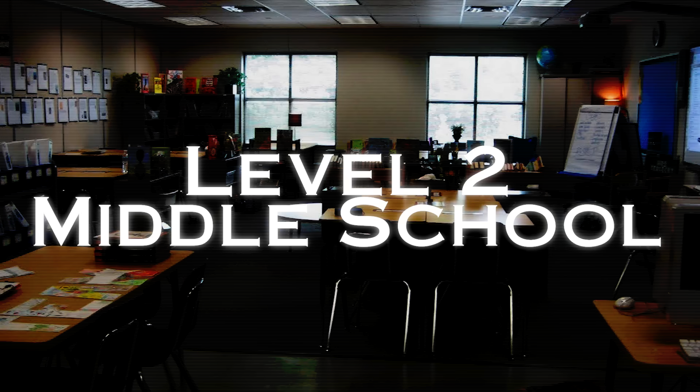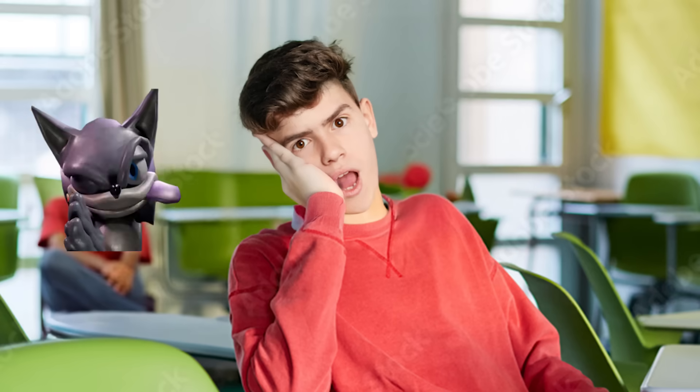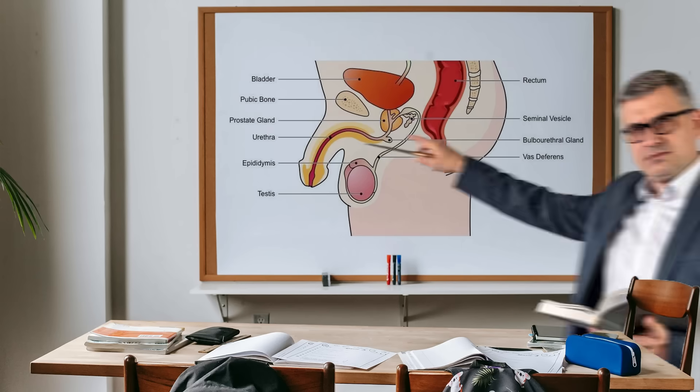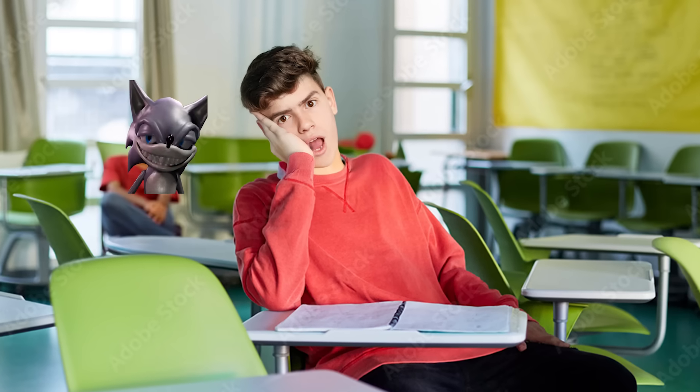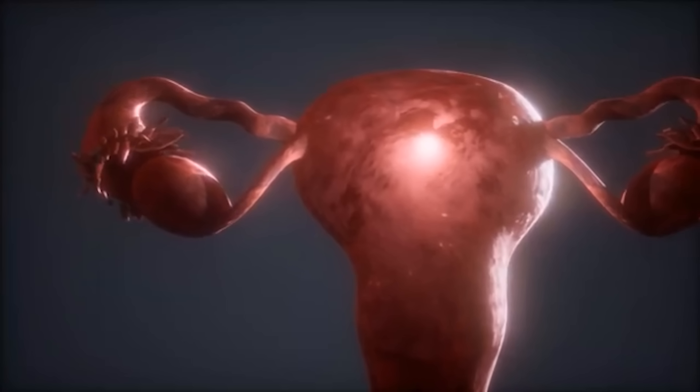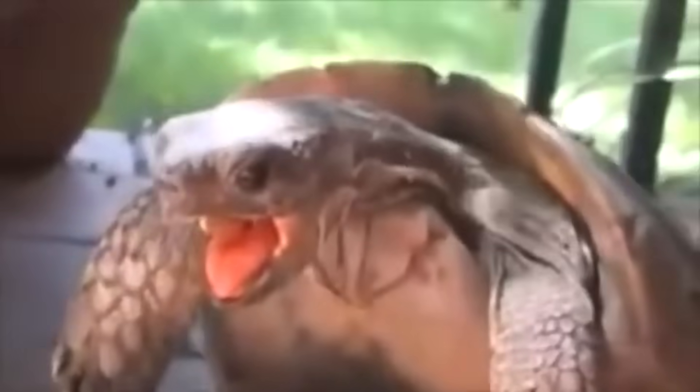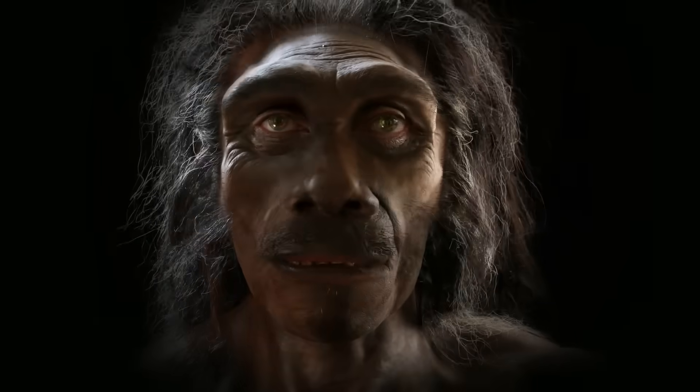Level 2. Middle School. You're sitting in class one day and the teacher pulls up a massive image of someone's junk that's been chopped in half and asks you to name all the components. No, you're not dreaming. You've just started the reproduction module in biology, which means you'll be learning about the reproductive system, mating and Darwinian evolution.